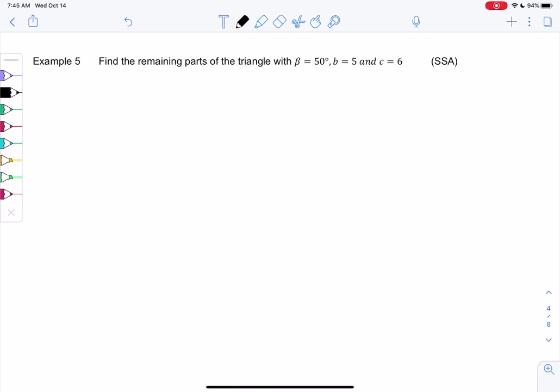Section 5.3, example 5, we'll find the remaining parts of a triangle. So we have B, or capital B is easier than beta, is 50 degrees, b is 5, and c is 6.